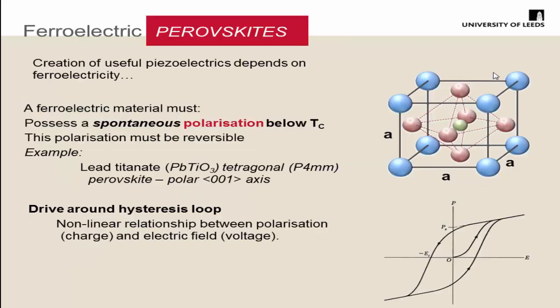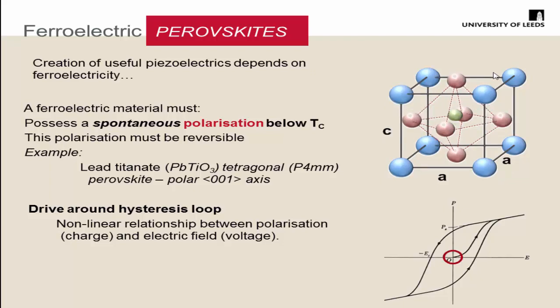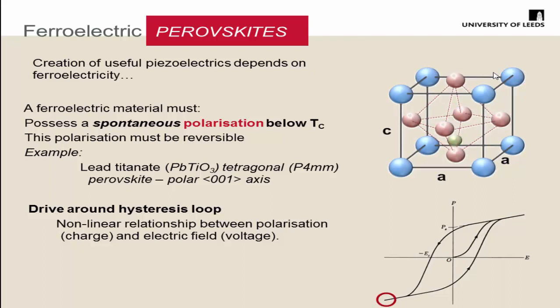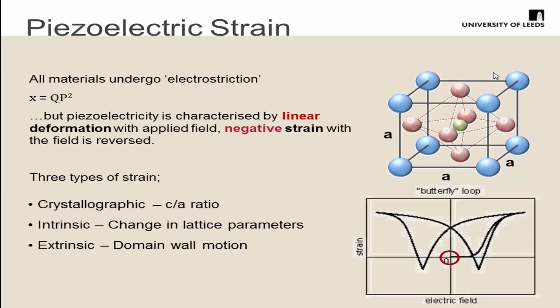We've been looking explicitly at ferroelectric piezoelectrics and particular perovskites. The ferroelectric materials in the ABO3 structure must possess a spontaneous polarization below the Curie point — the example here being lead titanate — characterized by a polarization loop. As we drive around with the electric field, we can see the changes to the crystal structure, and that's the fundamental basis of developing the piezoelectric strain.